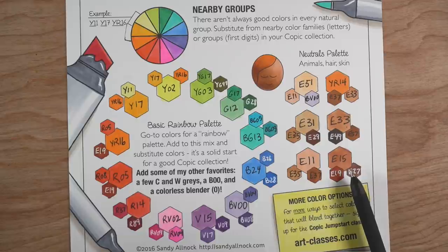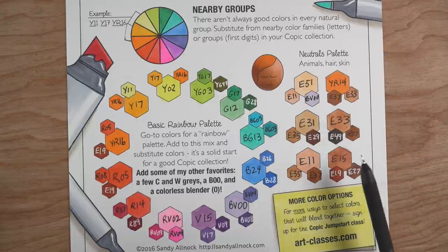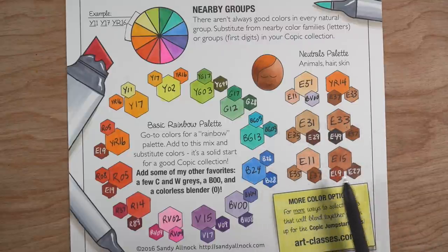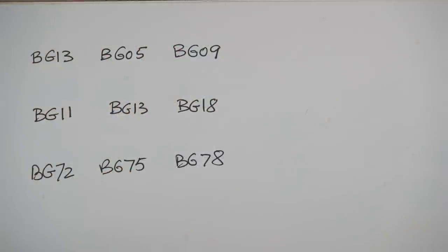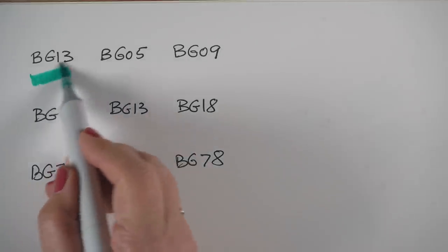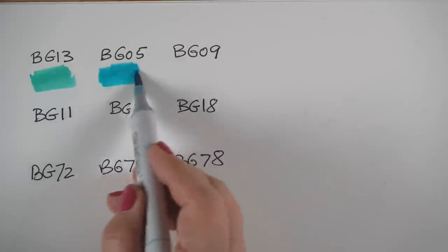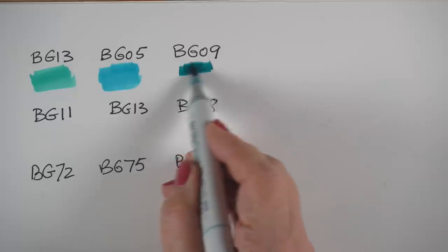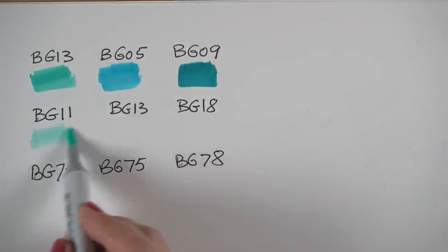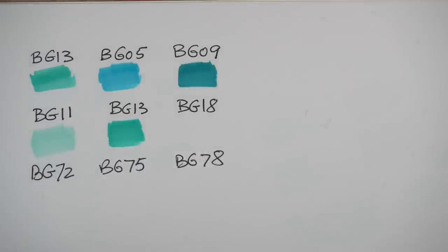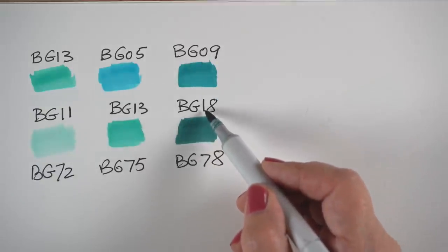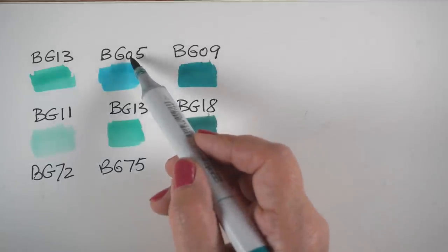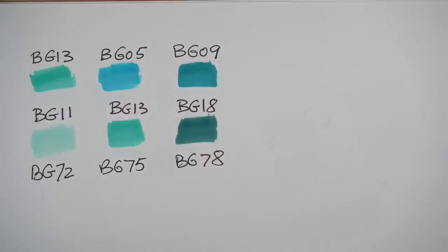There's also a neutrals section with a few ideas for skin tones, hair, and similar things. If you're brand new and looking for colors, choose the kinds of objects you like to color and pick colors that apply to that — don't feel like you have to get the whole rainbow to get started. Now I'm going to show you some different blue-greens and how they relate to each other. The first combination is the one on the sheet: notice the middle color is a BG05, which is a little more bluish. The BG09 is brighter than the BG18 — remember, the lower the number, the higher the saturation.